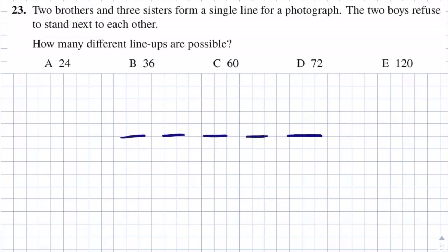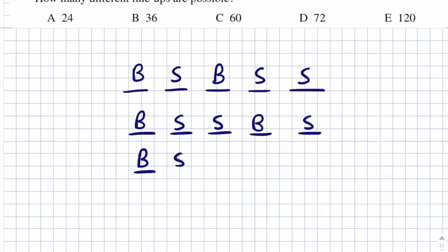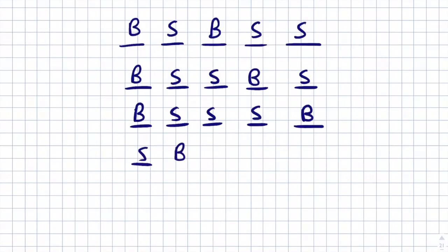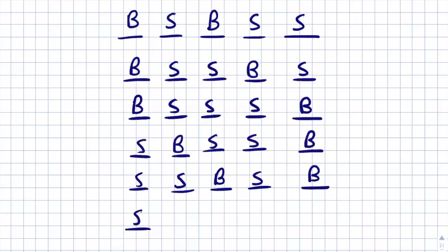We need to figure out all the different scenarios where the two brothers are not standing next to each other. Scenario 1: brother, sister, brother, sister, sister. Scenario 2: the brothers are two spaces apart. Scenario 3: the brothers are three spaces apart. Scenario 4: brother in position 2, brother in position 5. Scenario 5: sister, brother, sister, brother, sister. That covers all possible scenarios.